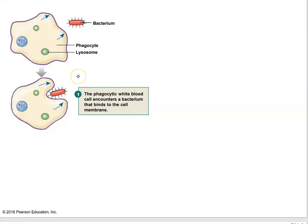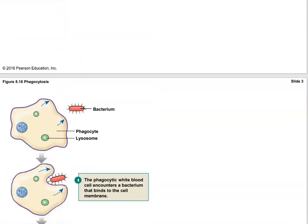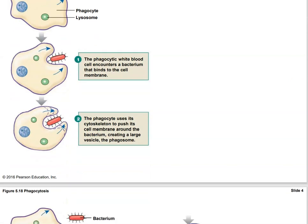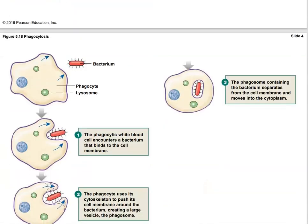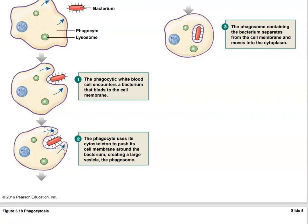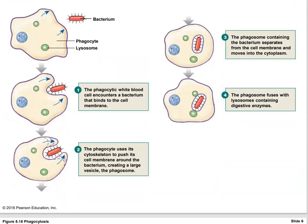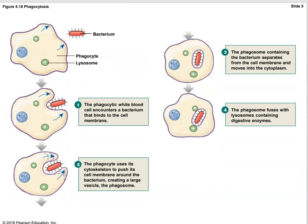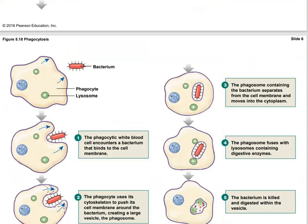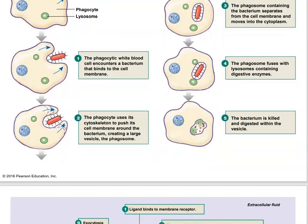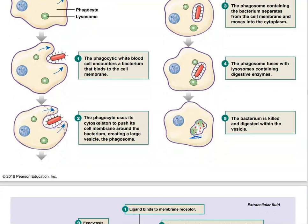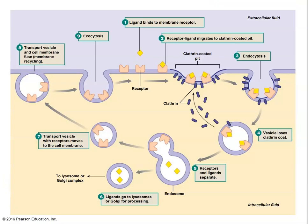Here's a bacterium, and the phagocytic cell comes along to engulf it. Eventually it's fully internalized inside the cell. Then we fuse lysosomes to digest this bacterium. Eventually the bacterium is dead, and we get rid of the digested pieces.